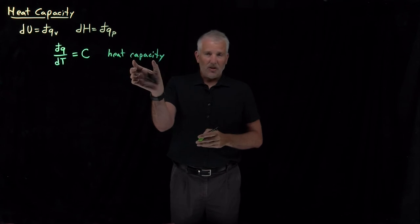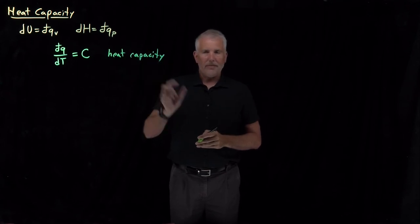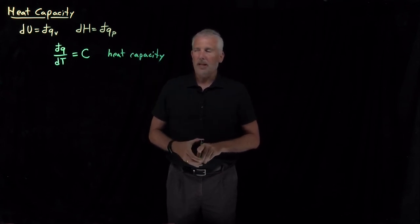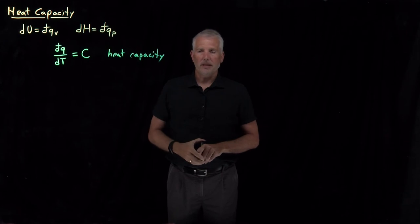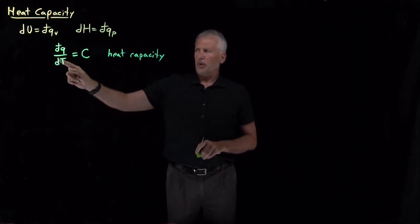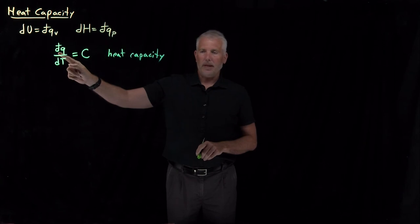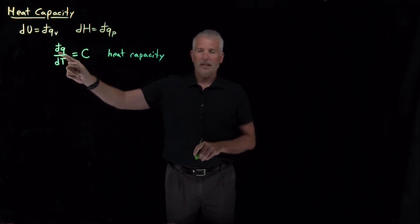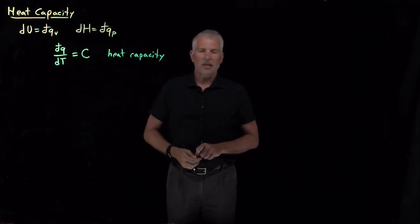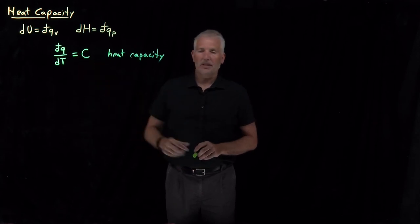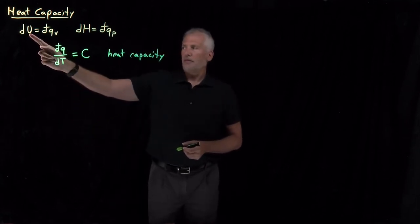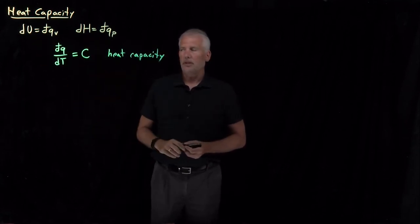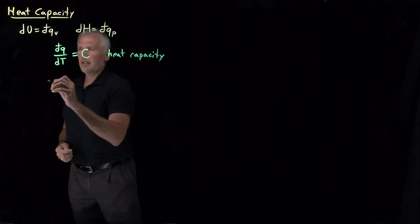Heat's not something that can be held. Objects don't have a capacity for heat in the way that this term implies, but the amount of heat transfer required to change the temperature by one degree is called the heat capacity. Notice this derivative looks a little bit weird — I've had to write a path-dependent inexact differential đQ above dT in the denominator, because heat is a path-dependent quantity. Instead, it's often more useful to think about state functions like energy and enthalpy.